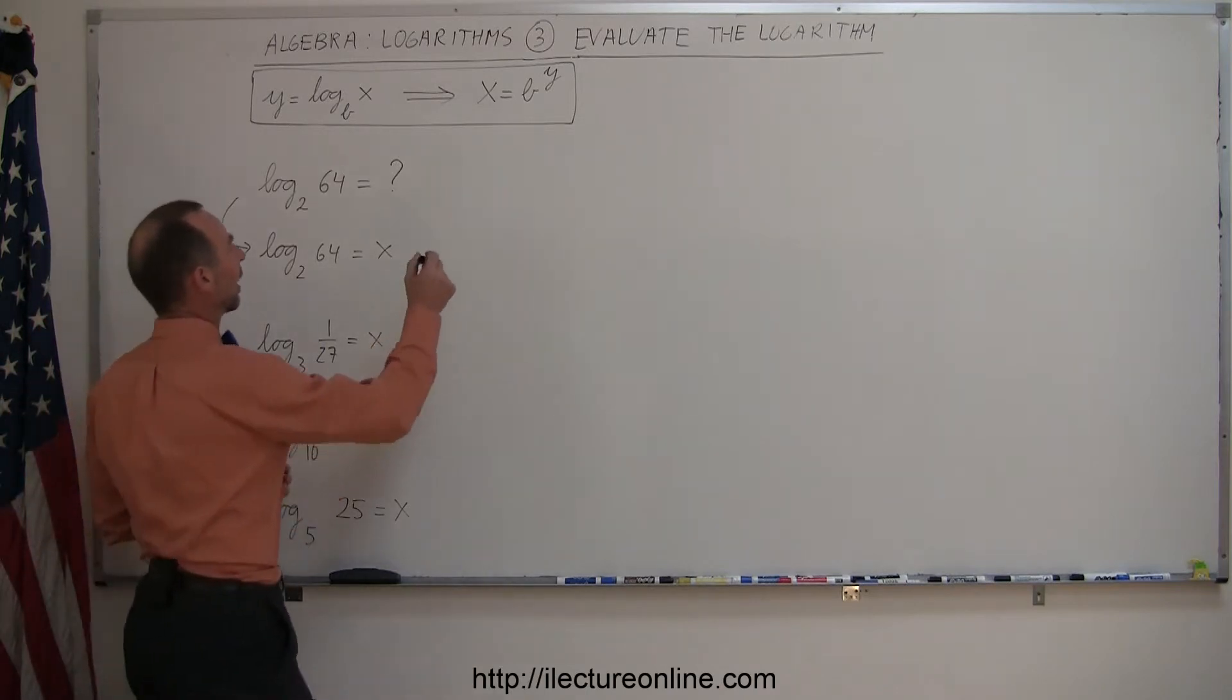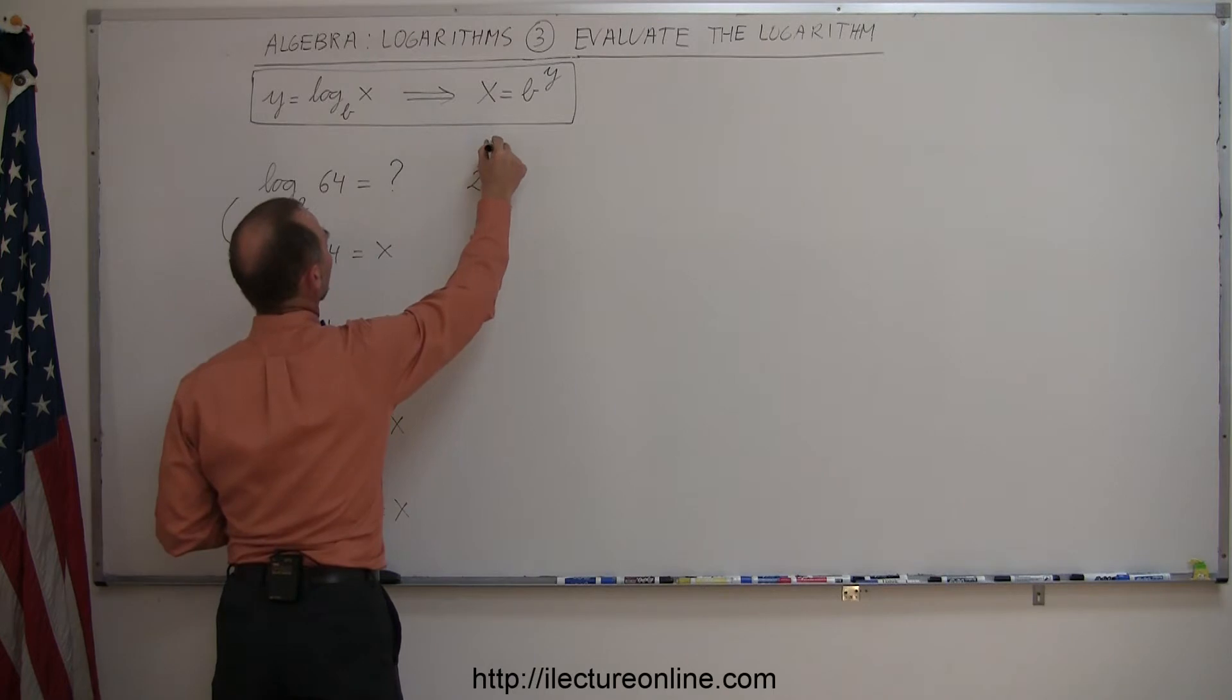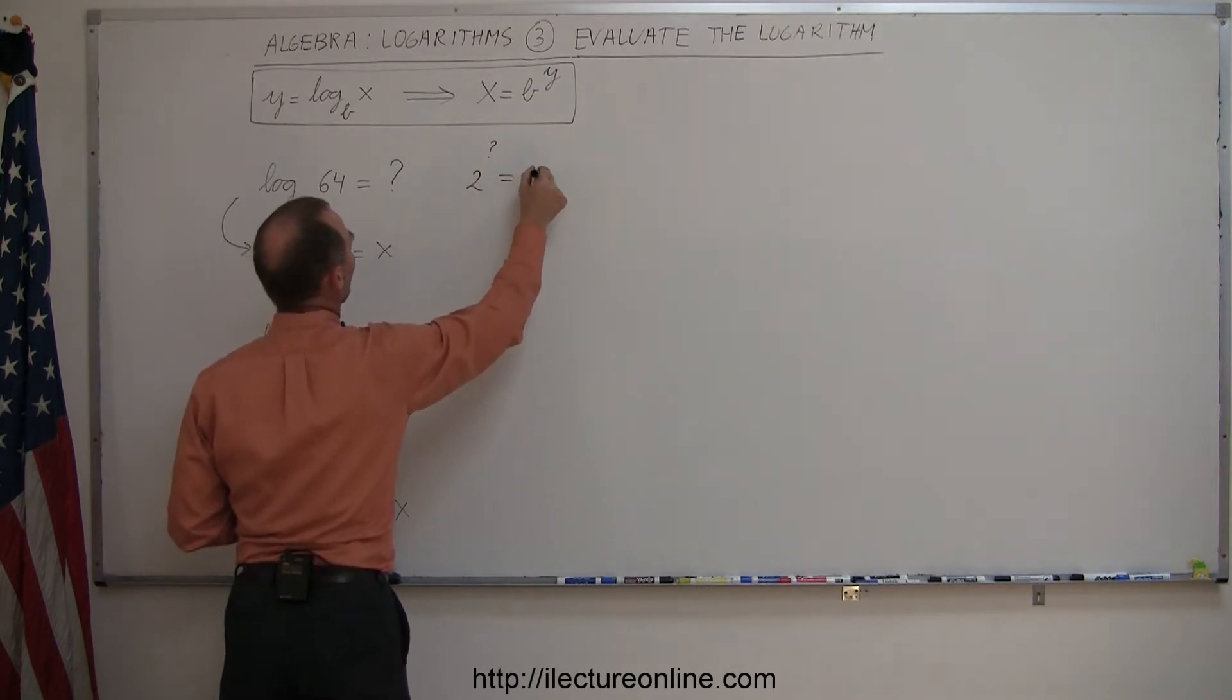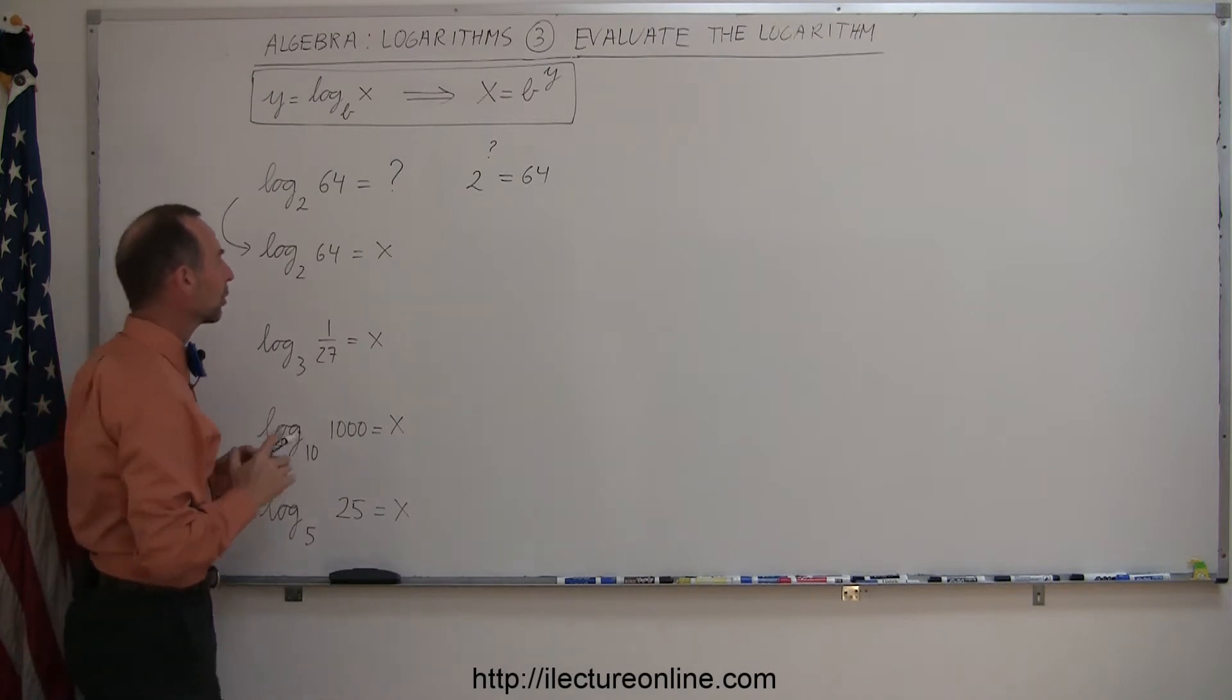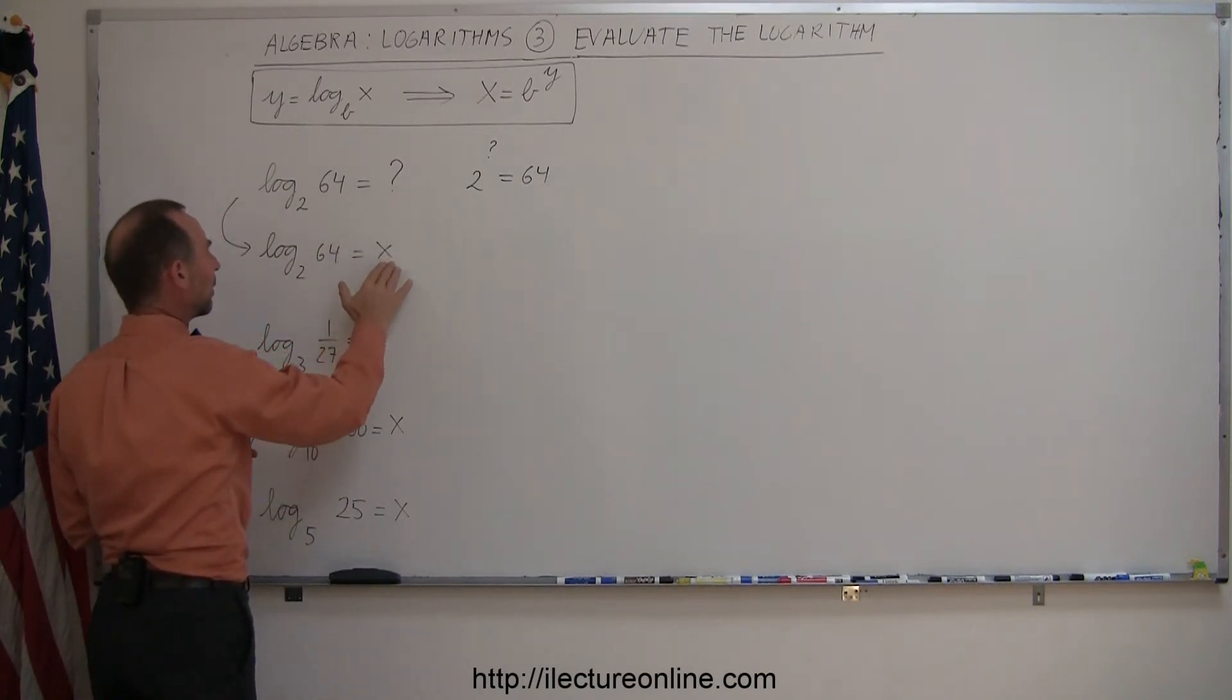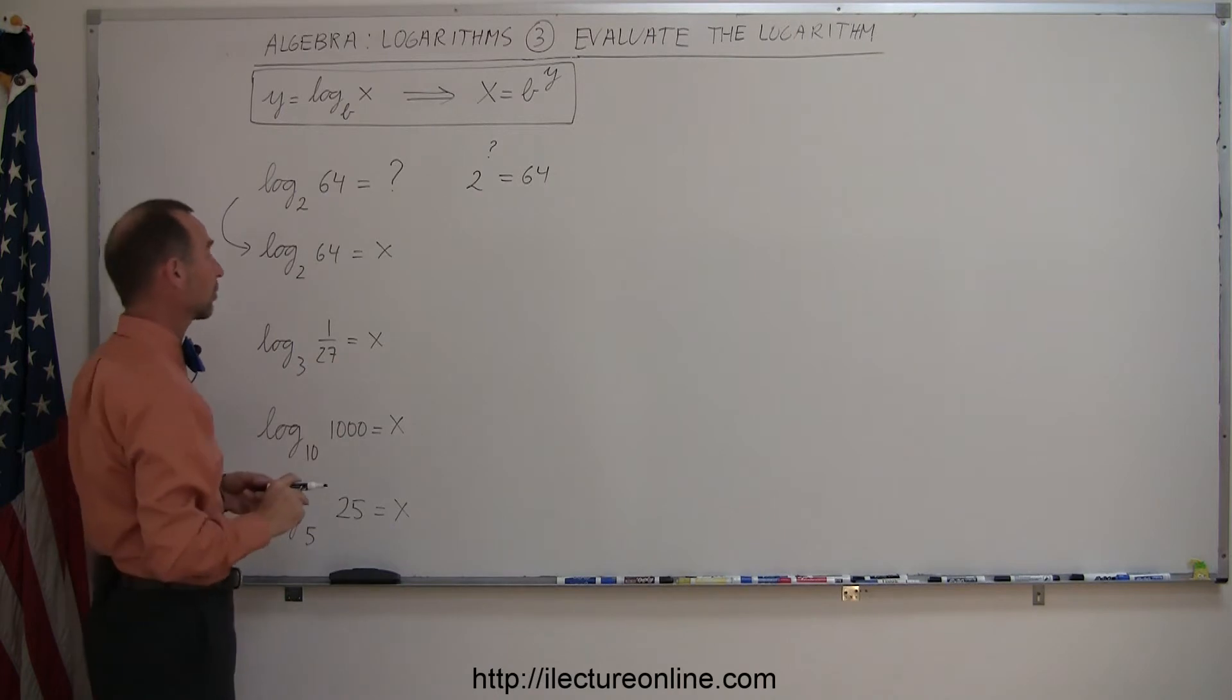What that really means is that you're taking the base and raising it to this unknown number and you should get 64. And the question is, what is that unknown number? So to make it simpler to work with it, we'll let the unknown number be represented by x. And so in this case we're going to be solving for x.